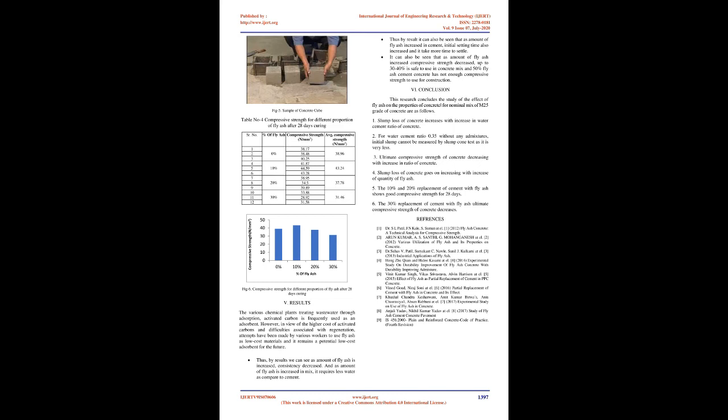Conclusion. This research concludes the study of the effect of fly ash on the properties of concrete for a nominal mix of M25 grade. (1) Slump loss of concrete increases with increase in water cement ratio. (2) For a water cement ratio of 0.35 without any admixtures, initial slump cannot be measured by slump cone test as it is very less. (3) Ultimate compressive strength of concrete decreases with increase in water cement ratio.